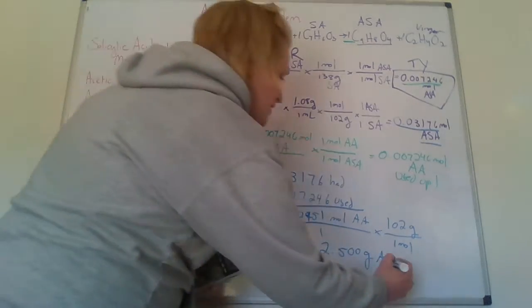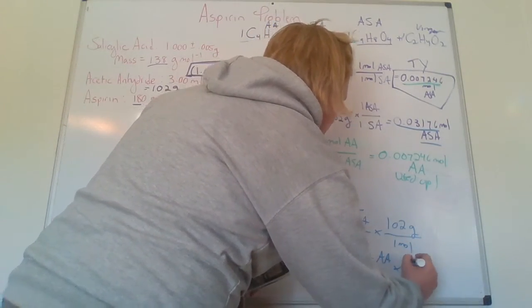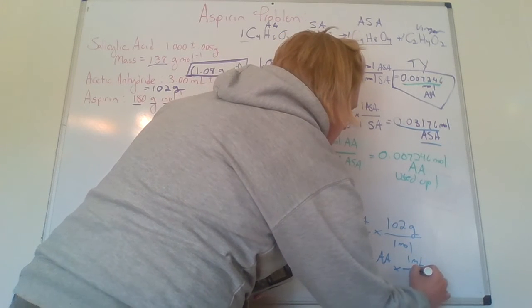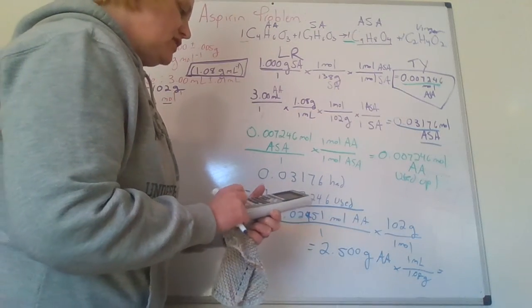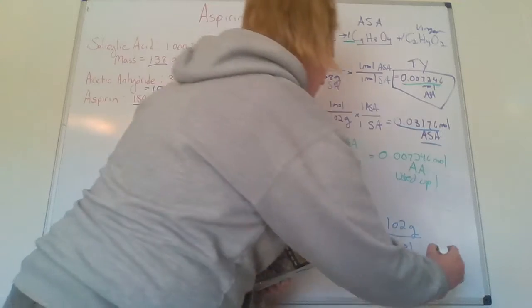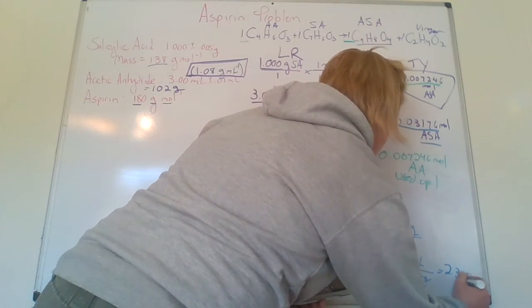I could also take that and multiply it by the fact that in one milliliter, there's 1.08 grams and I could go back to milliliters like I started, dividing by 1.08 and it'll be 2.315 milliliters.